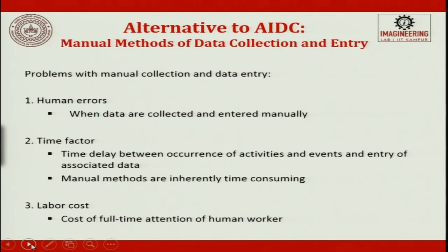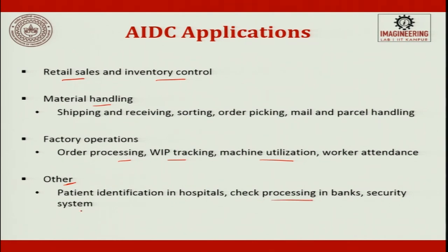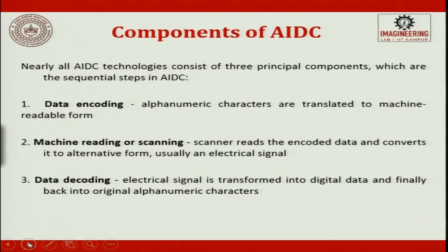To summarize the problems with manual data collection: human errors occur during data collection, there is a time delay between occurrence of activities and entry of associated data, and labor costs are significant. Applications of AIDC cover a wide range, including retail sales and inventory control, material handling such as shipping, receiving, sorting, and order picking, factory operations like order processing and work-in-progress tracking, and other applications like bank transactions, hospital patient identification, check processing, and security systems.